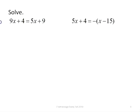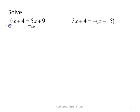Let's look at the equation 9x plus 4 equals 5x plus 9. We do not have any parentheses or like terms, so our first step is to get the two terms that have x in them on the same side of the equation. I want to get rid of my 5x, and since it's a positive 5x, I'm going to subtract 5x from both sides.